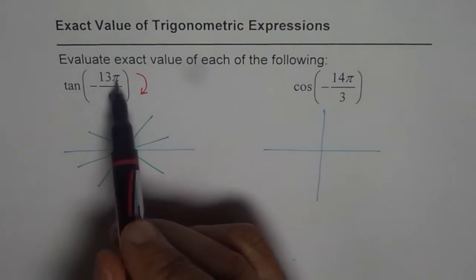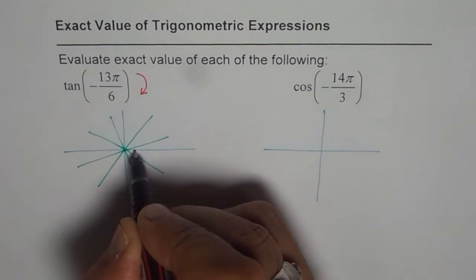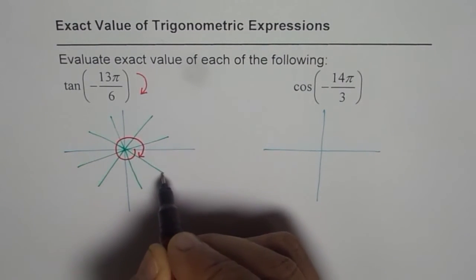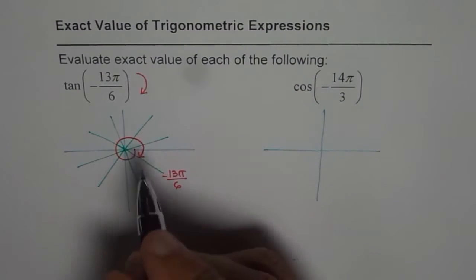When we say 13π by 6 with a negative sign, we will move in clockwise direction. One full circle means 12 and one more means 13. So this is minus 13π by 6. With that, we know in which quadrant we have landed.